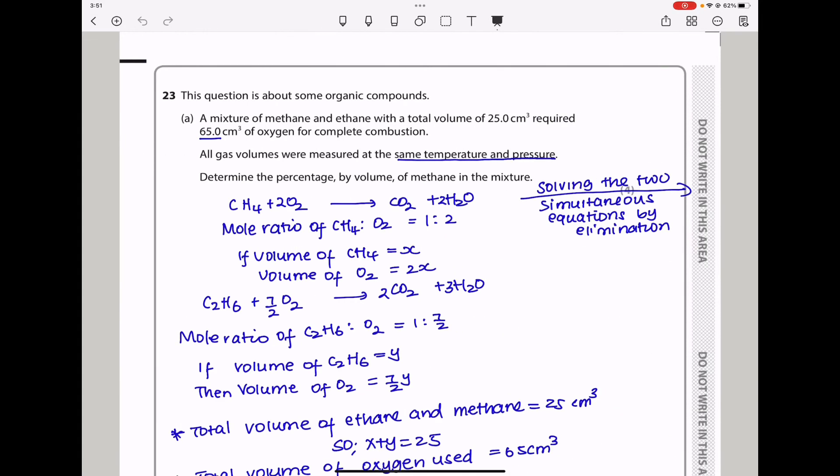Question 23. This question is about some organic compounds. A mixture of methane and ethane with total volume of 25 cm³ required 65 cm³ of oxygen for complete combustion. All gas volumes were measured at the same temperature and pressure. Determine the percentage by volume of methane in the mixture. I began by writing individual equations. If methane reacts with oxygen, we produce carbon dioxide and water - this is the balanced equation. The mole ratio is each methane requires twice the amount of oxygen. If the volume of methane used was X, then oxygen volume is 2X.